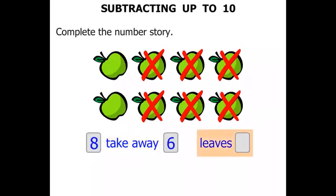And it leaves how many? 1, 2. So we write 2 there. So we've got 8 take away 6 leaves 2. That's the number story.